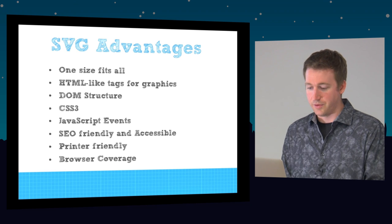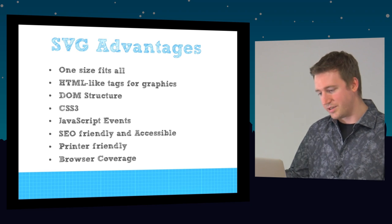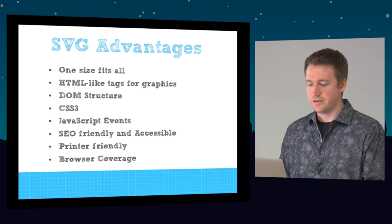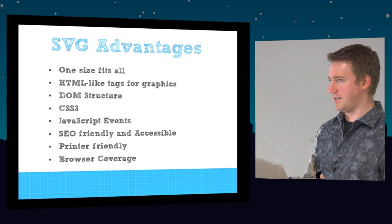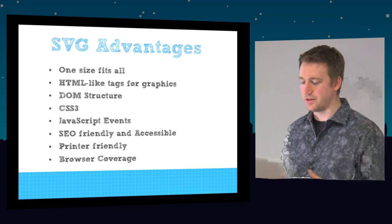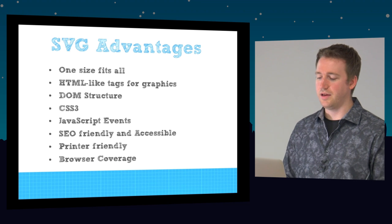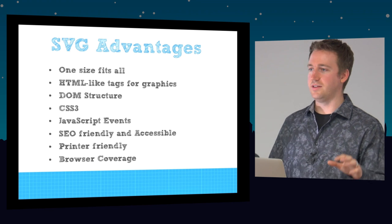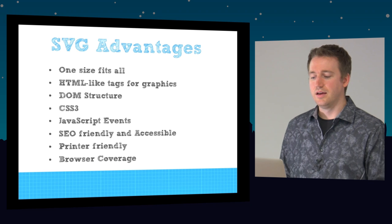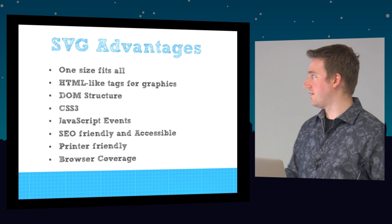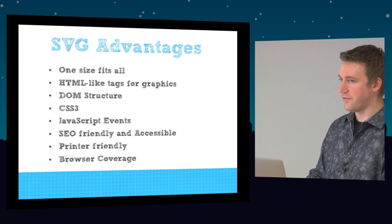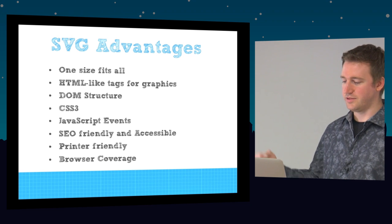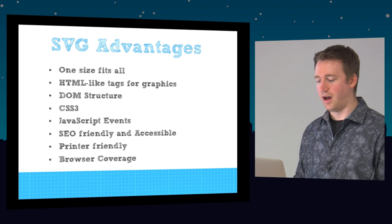As I mentioned, HTML-like tags for graphics. DOM structure — it's got a whole document object model just like HTML does. CSS3 works on it, so you can actually style these graphics with CSS. And then you've got all of the JavaScript events — like you can bind click events to these graphical elements.